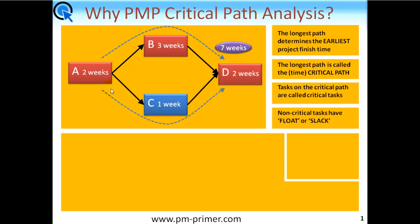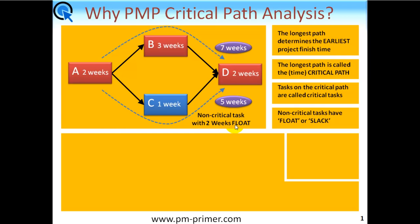In this simple example, there's another path: A, C, and D. This is clearly a shorter path — if you add these up, it comes to five weeks. Therefore, in this example, C is the only non-critical task. If you look at the difference between seven and five, it gives you two weeks. So C is a non-critical task and has, in this case, two weeks of float.